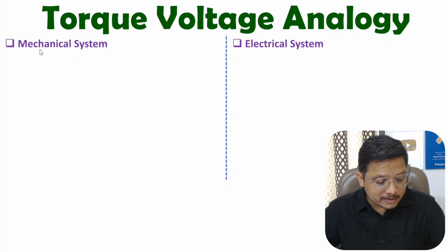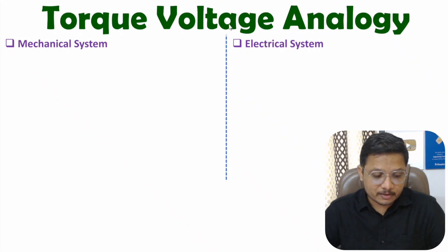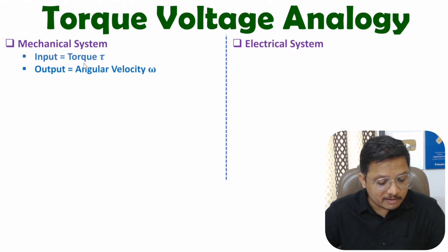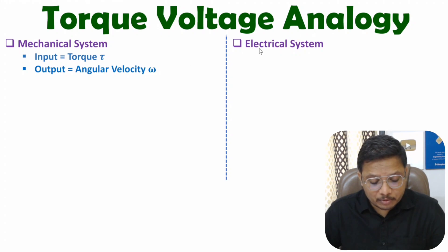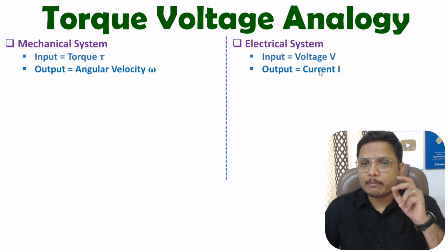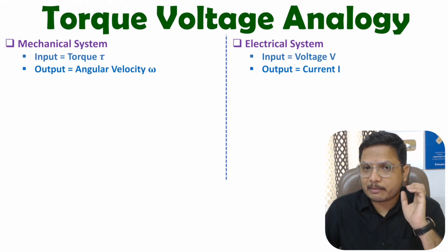With the mechanical system, input will be torque, and with the electrical system, input will be voltage. With the mechanical system, output will be angular velocity, while with the electrical system, output will be current. Now I will explain the comparison of mechanical parameters with electrical parameters.